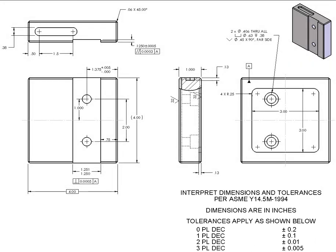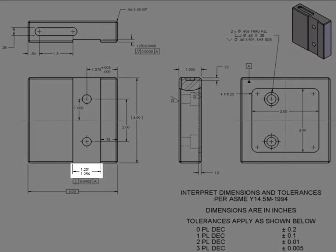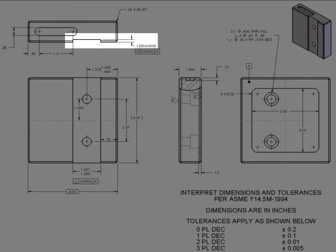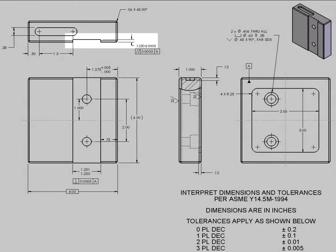When describing a feature size of a part, we express the size as its nominal or basic size. For example, the 1.250 to 1.251 slot would be referred to as the inch and a quarter slot, as its nominal size is one and a quarter inches. The nominal feature size for the slot depth would be one eighth of an inch.